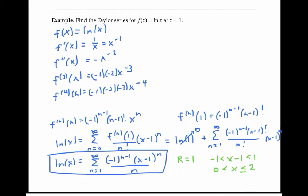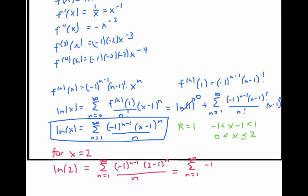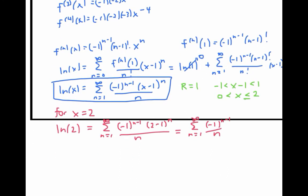Now if I plug in x equal to two into my equation, I get something interesting. I get that ln of two is equal to the sum from n equals one to infinity of negative one to the n minus one times two minus one to the n — well, that's just one to the n, which is just one. And so I get ln of two is equal to the sum of negative one to the n minus one over n. That should be looking familiar to you. This is just the alternating harmonic series: one minus one half plus one third minus one fourth, and so on. So Taylor series has given us the sum of the alternating harmonic series, and it is ln of two.